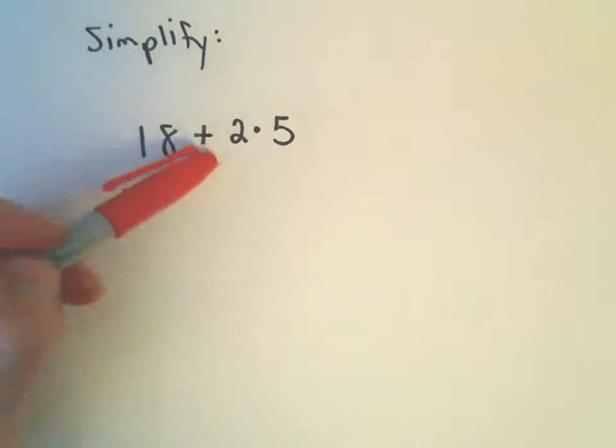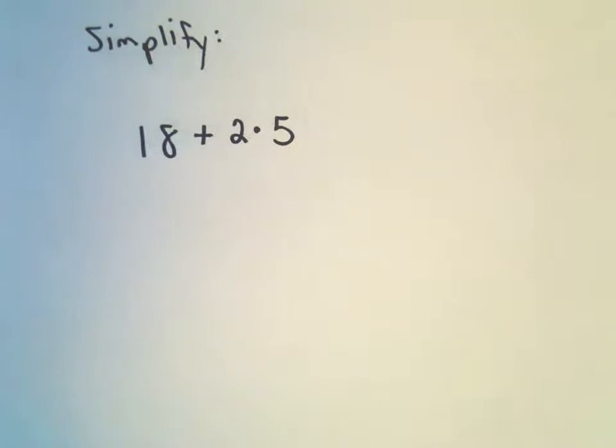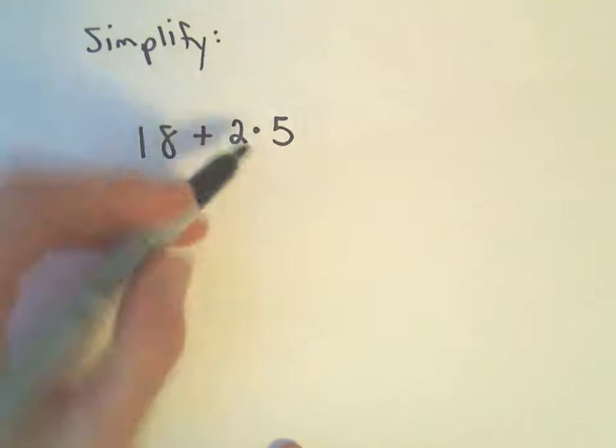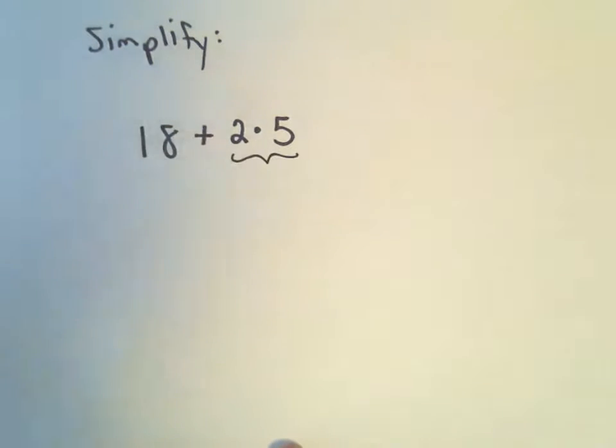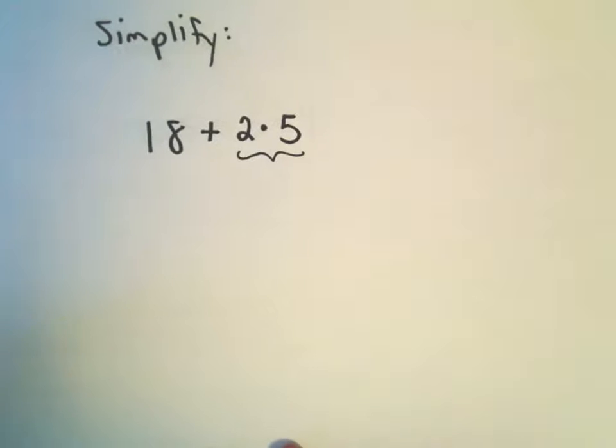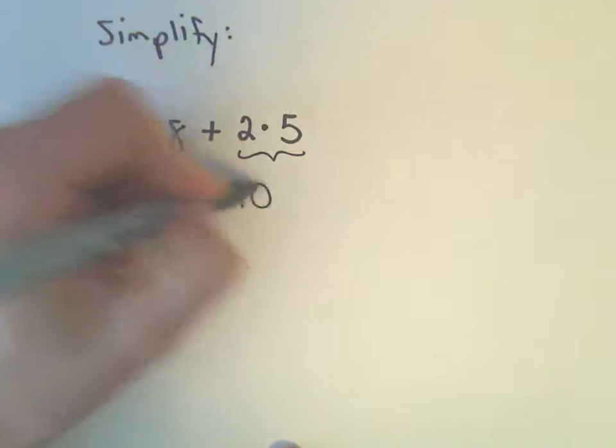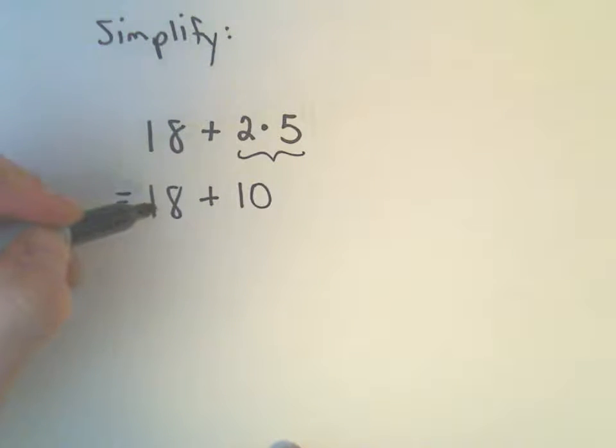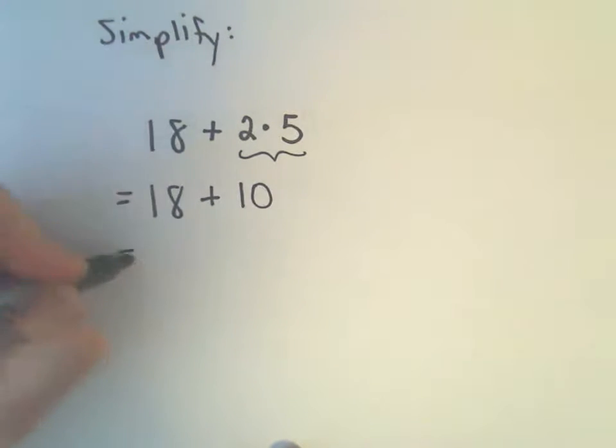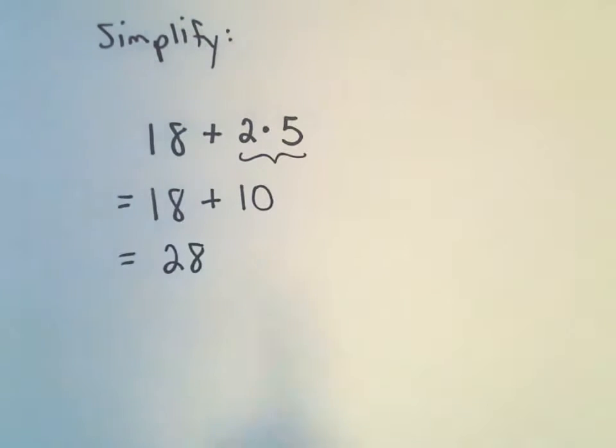So here we've got 18 plus 2 times 5. The first thing we have to do, I see addition and multiplication. The multiplication has priority, so we do this part first. I'm going to have 18 plus, if I think about 2 times 5, that's just 10. And then 18 plus 10 is going to give us 28, and there's our solution.